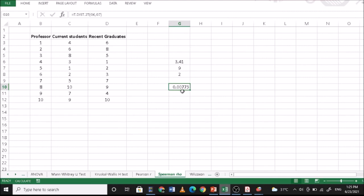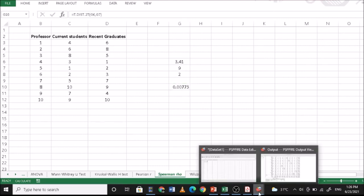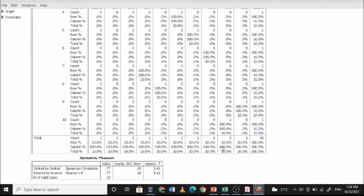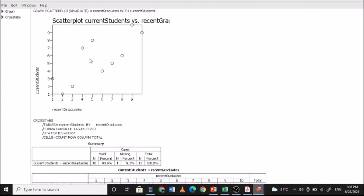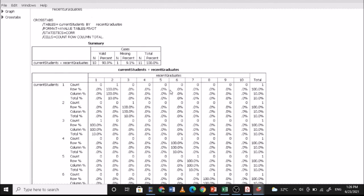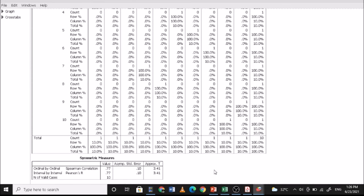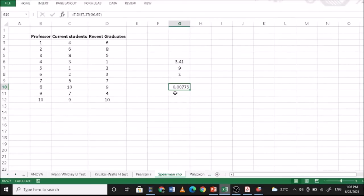This is now 0.007, which is less than 0.05. There is significant relationship between the ranking of current students and recent graduates. If you look at your scatterplot, you can actually see that there is a positive relationship between your recent graduates and your current graduates. The professors are ranked accordingly. That's your Spearman Rho using PSPP and Excel.